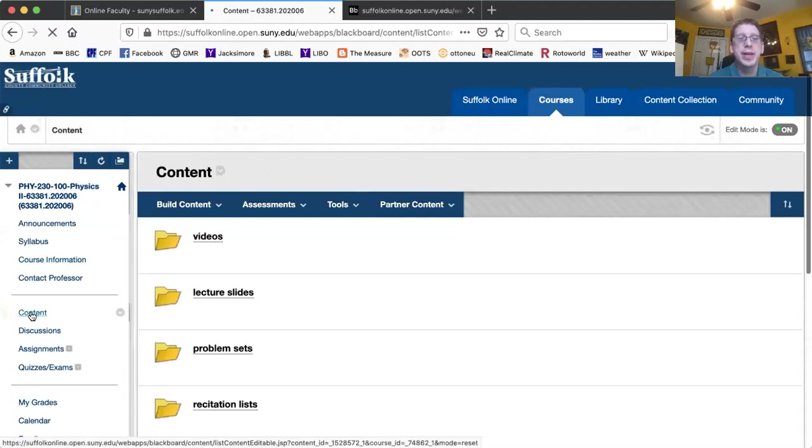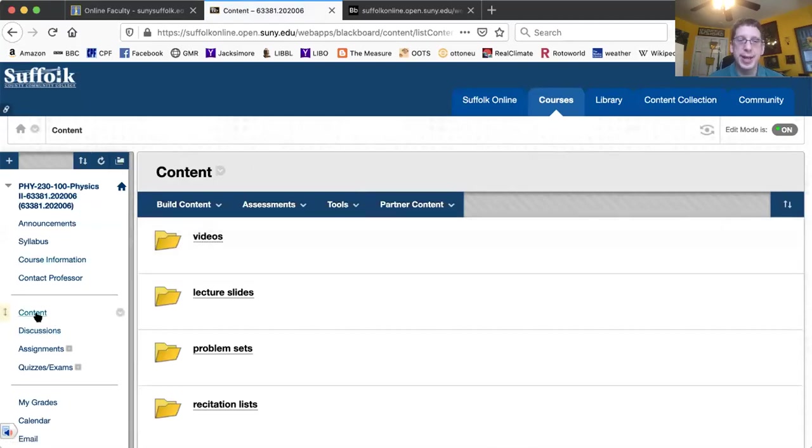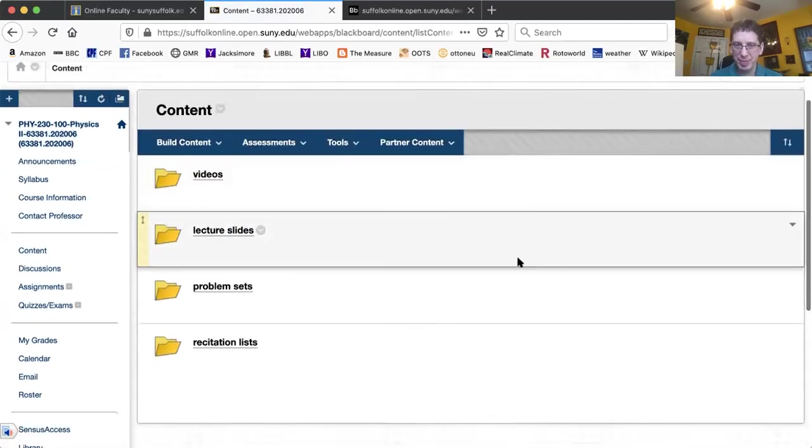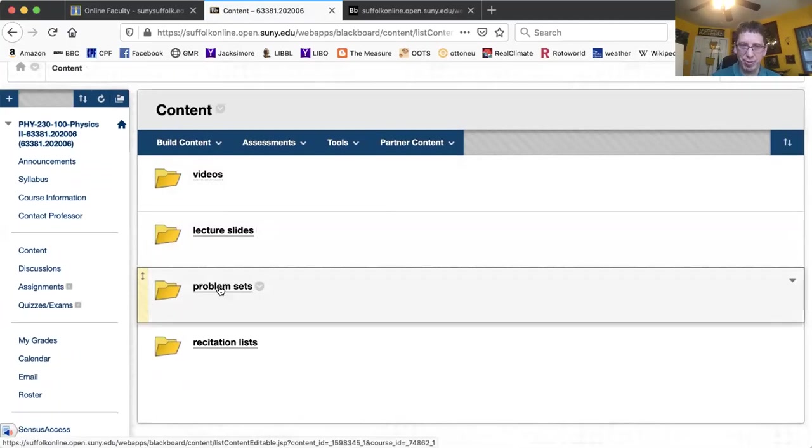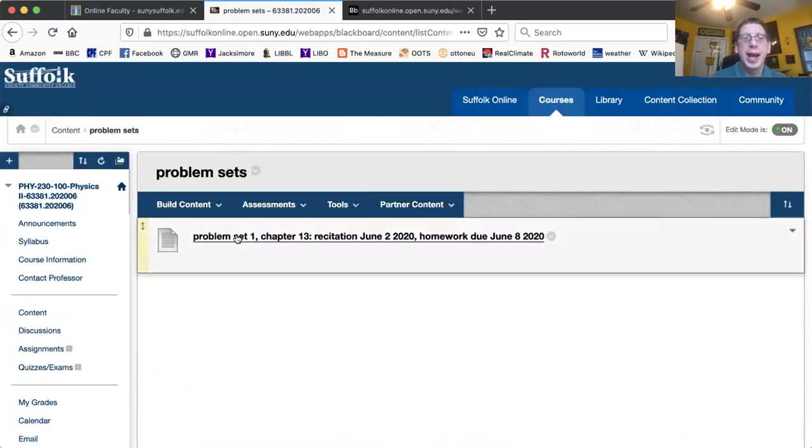I'll begin by showing you where in Blackboard to look for this. So you open the directory for the course and you go to Content. When you go to Content, you have a bunch of different directories. Look under Problem Sets. Then you open the Problem Set. It'll either show up for you or it will download onto your computer and you can just open the file directly.